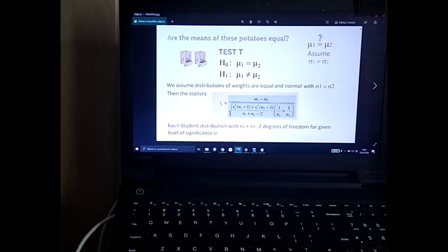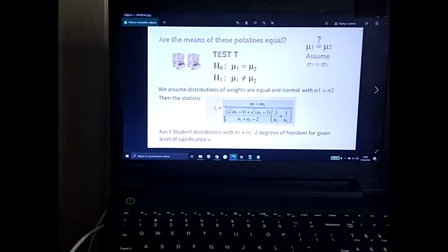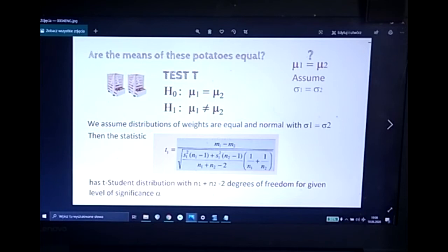What does test T mean? Let's recall that the null hypothesis is that μ1 equals μ2, and alternative is that μ1 is not equal to μ2. And we are assuming that the variances are equal. Then we have the following statistics, well known, where m1 and m2 are means of the samples taken. We are taking samples of n1, n2 elements and we obtain some means of weights and we obtain some standard deviations s1 squared, s2 squared and we calculate it using T-Student distribution. We find the test value and we compare it against the critical value for T-Student for given alpha, the level of significance and that number of degrees of freedom, n1 plus n2 minus 2.